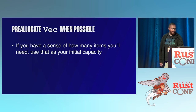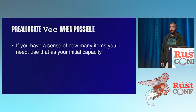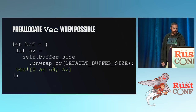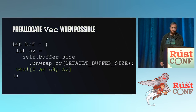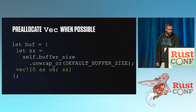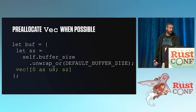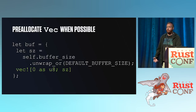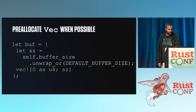Lastly, I want to talk about pre-allocating vecs. When you look at experienced Rust programmers' code, you see that they pre-allocate vecs everywhere — they hardly ever allocate at runtime. Here's an example from Linkerd TCP where we have a struct with a buffer size and default size, and we pre-make the buffer we use to shuttle data from inbound to outbound.